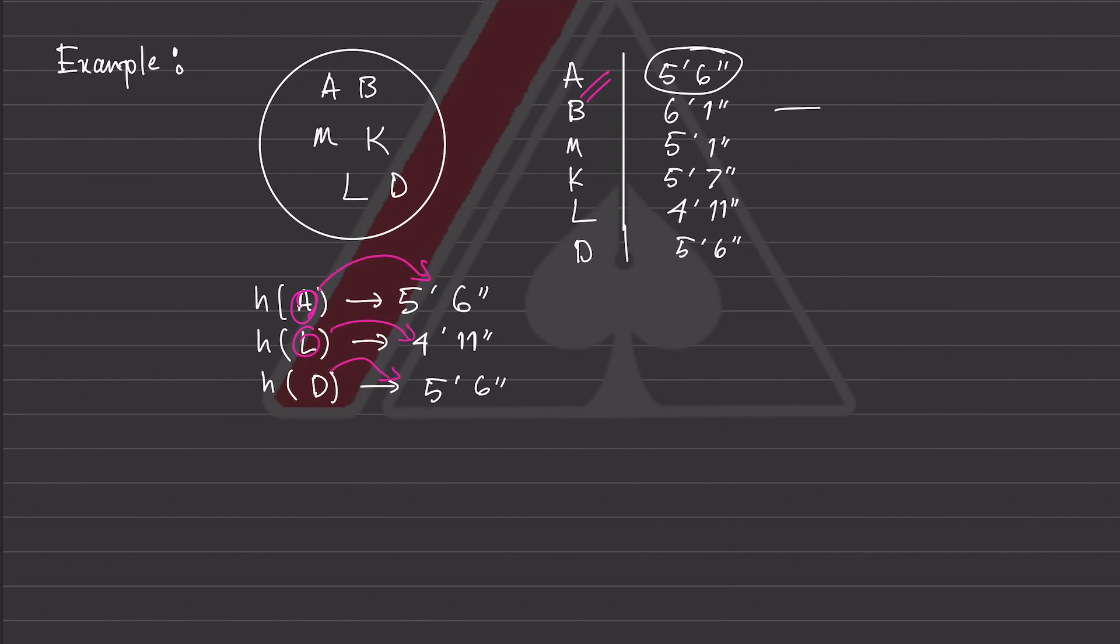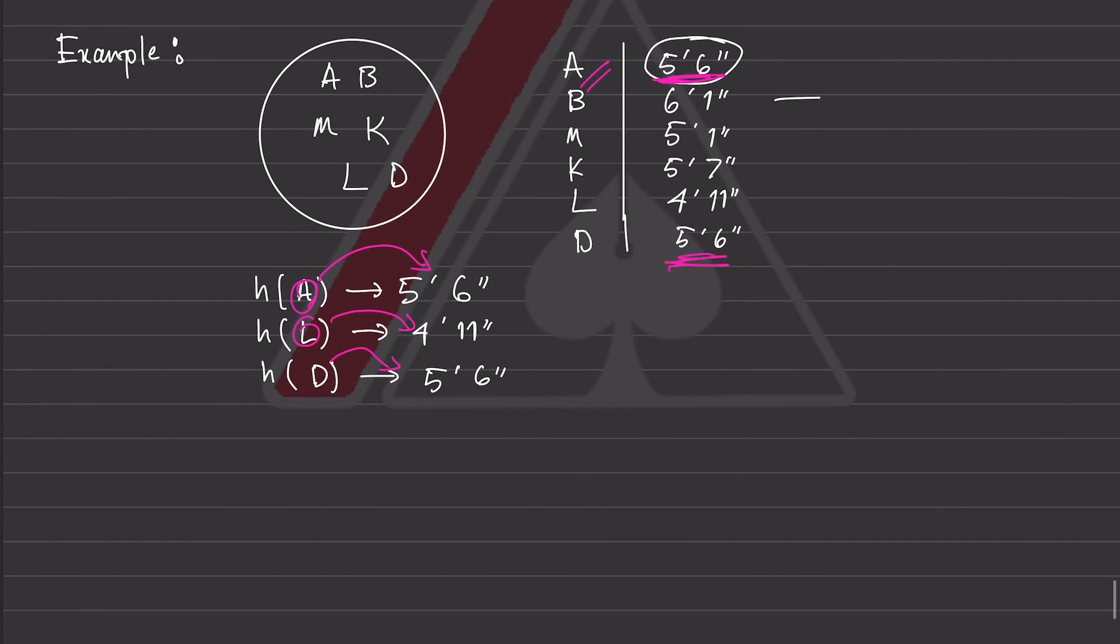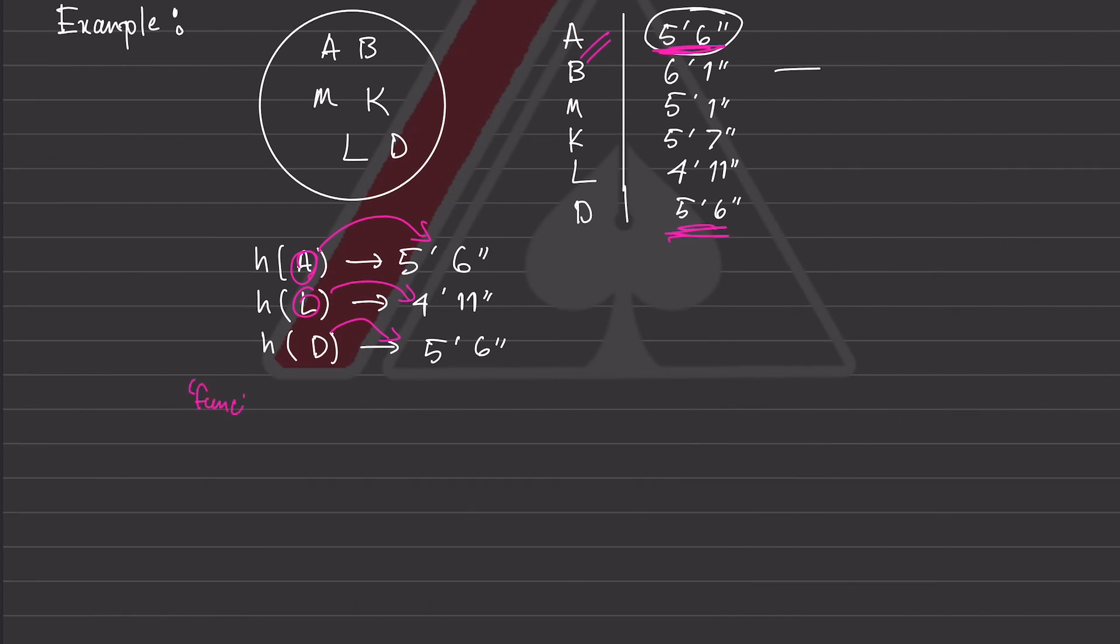So even though there's many inputs for which they have the same output, 5'6" in this case, this still stands, this is still functional, right? This relationship is still functional, as we always end up with a valid output. This, however, is a special type of function. It's called a many-to-one function.